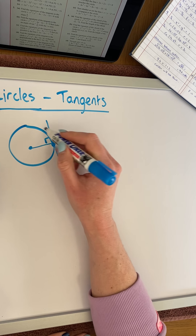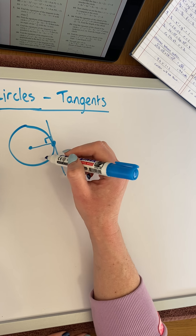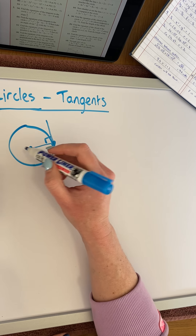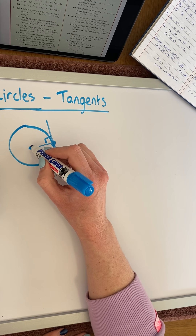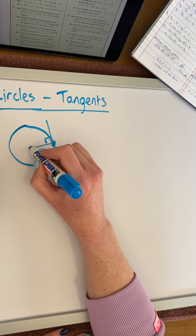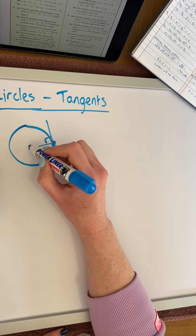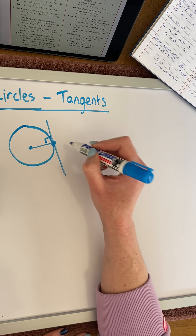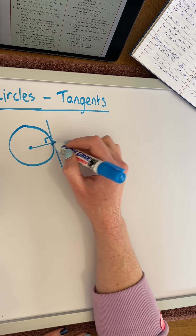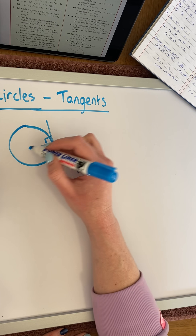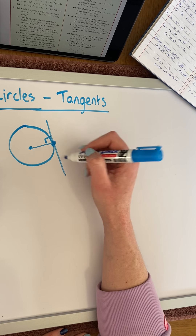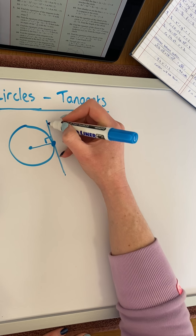Given the information about the circle, if we are given the equation of a circle, we can find the center coordinates, we can find the radius, and if we are given the point of contact, we can find other information about that as well.